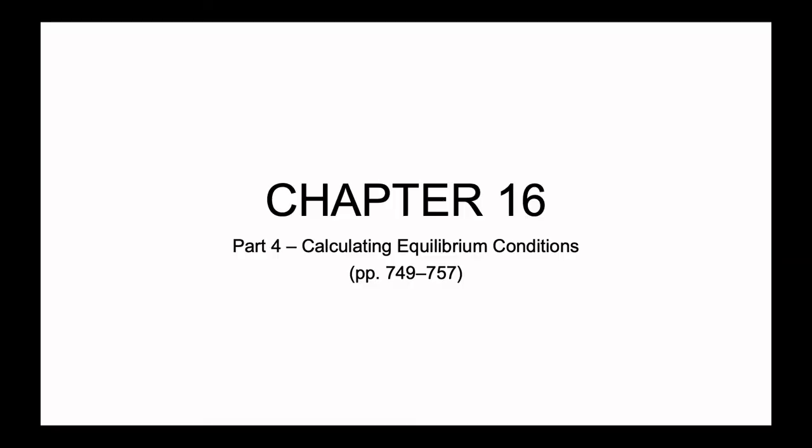Hello and welcome to part four of chapter 16, where thus far we have discussed reactions that are reversible, what it means for them to be at equilibrium, and how we can predict in which direction a reaction will go from the start in order to reach equilibrium. Today we're going to discuss the last quantitative piece of chapter 16: how we can calculate equilibrium concentrations from initial conditions, combining concepts from all previous parts and chapter eight.